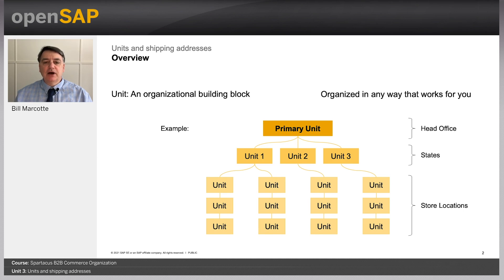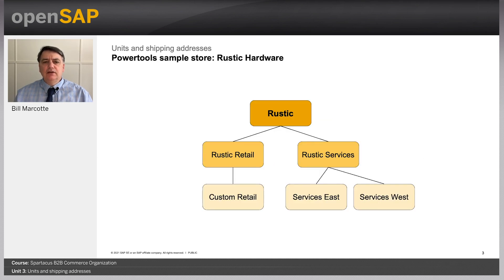It could mean anything — the primary unit could be a head office, second-level units could be states or provinces, and child units could be store locations. You could add another level for cities, then stores, then departments within stores. Whatever makes sense and meets your needs — as complex or as simple as you wish. The sample data has two sample stores; Rustic Hardware is documented on help.sap.com. Rustic is the root unit, with Rustic Retail and Rustic Services as child units, and Custom Retail below Rustic Retail — where Mark Rivers is assigned.